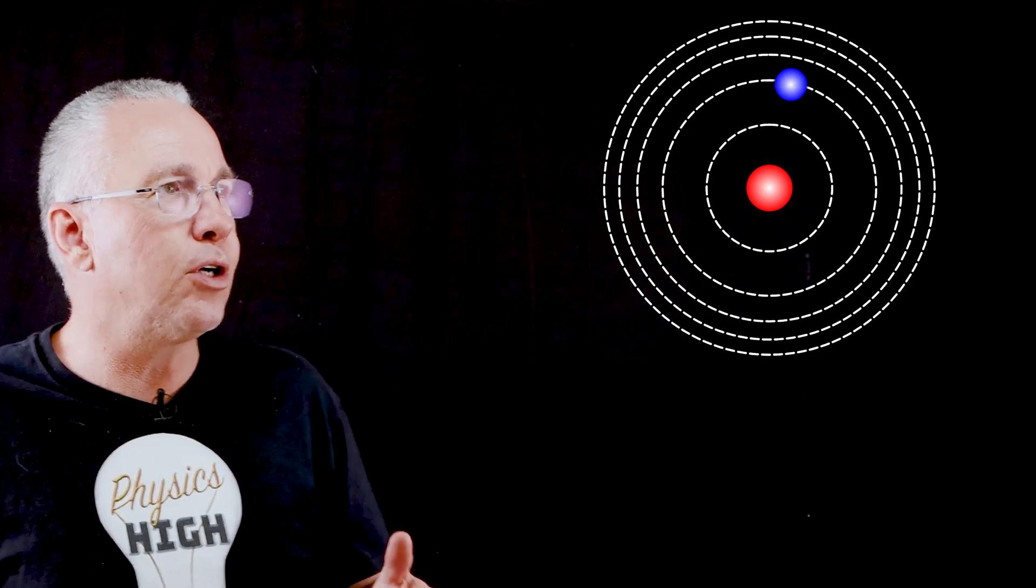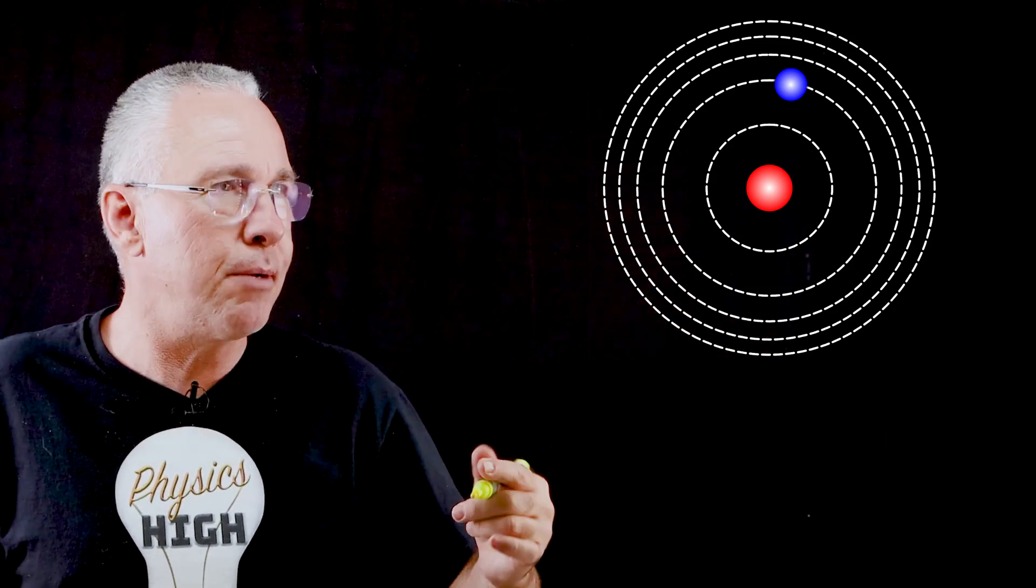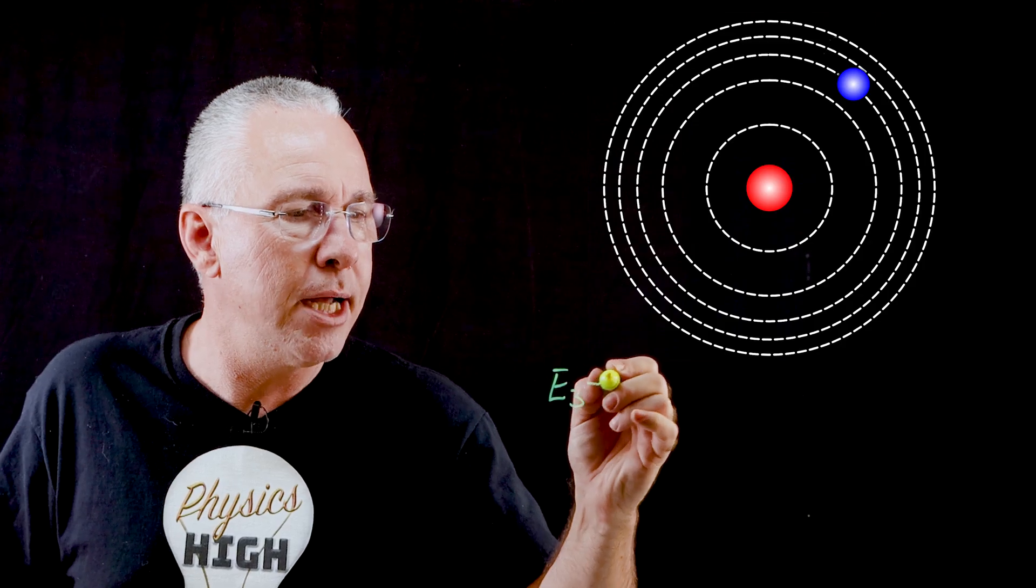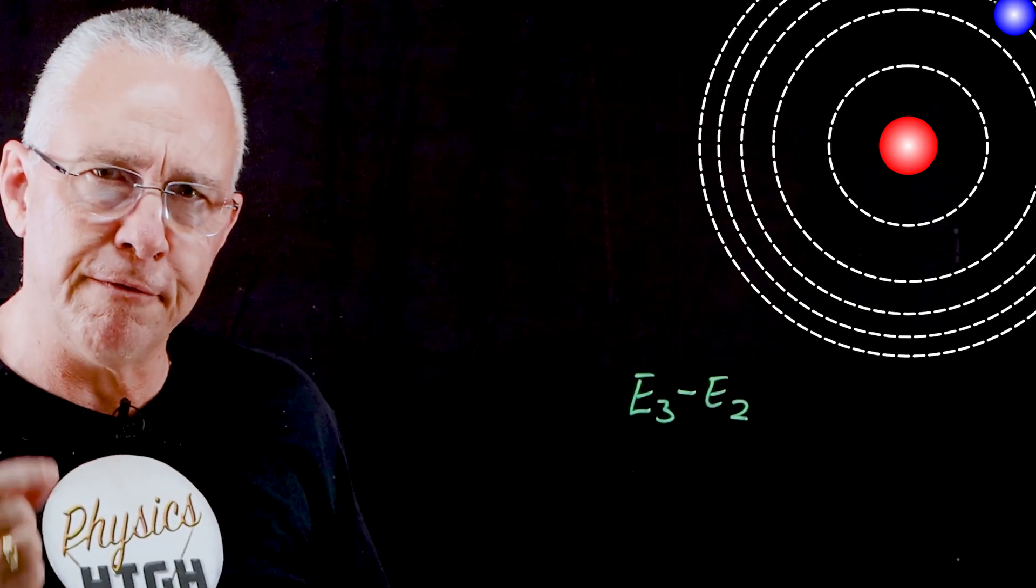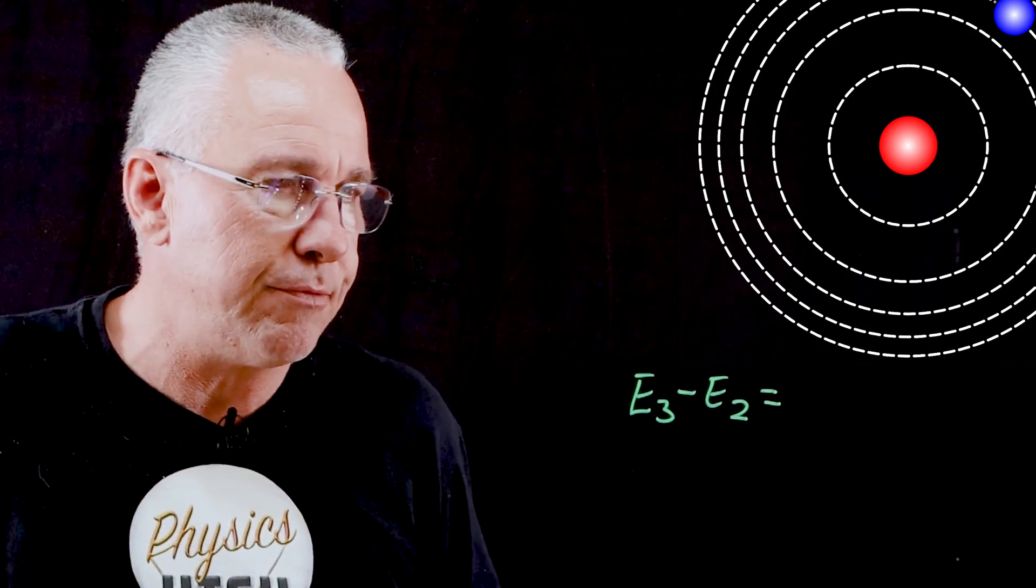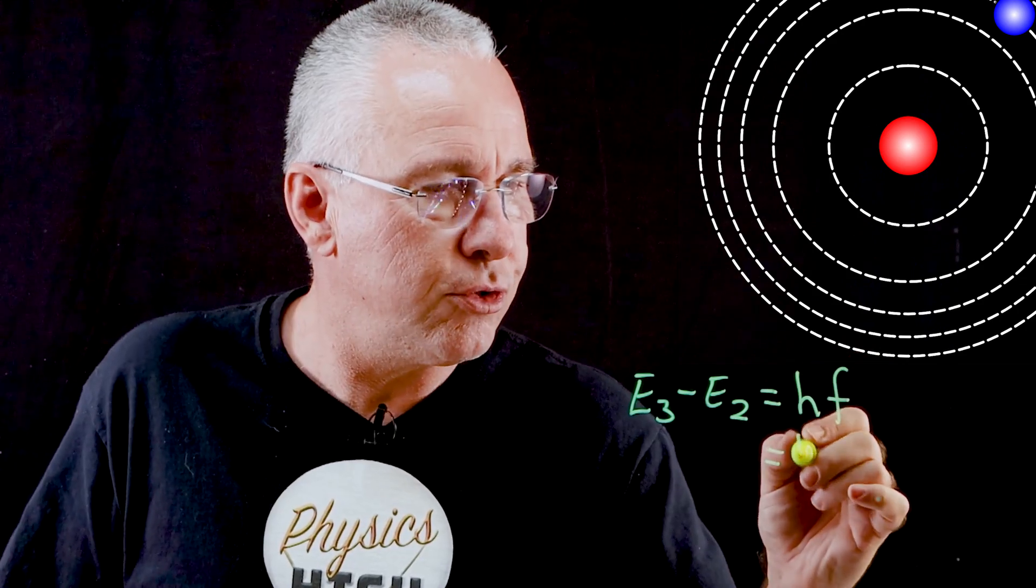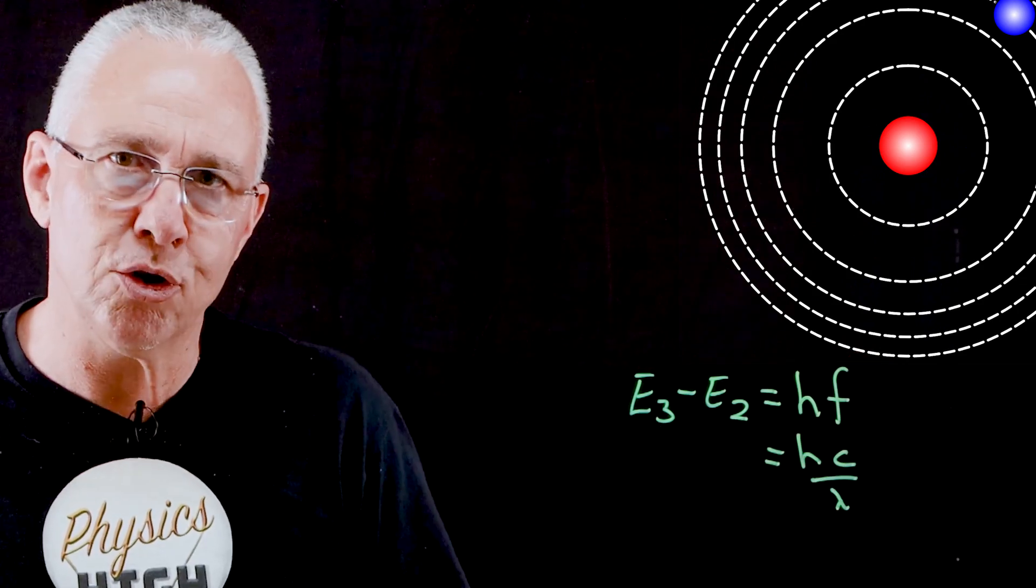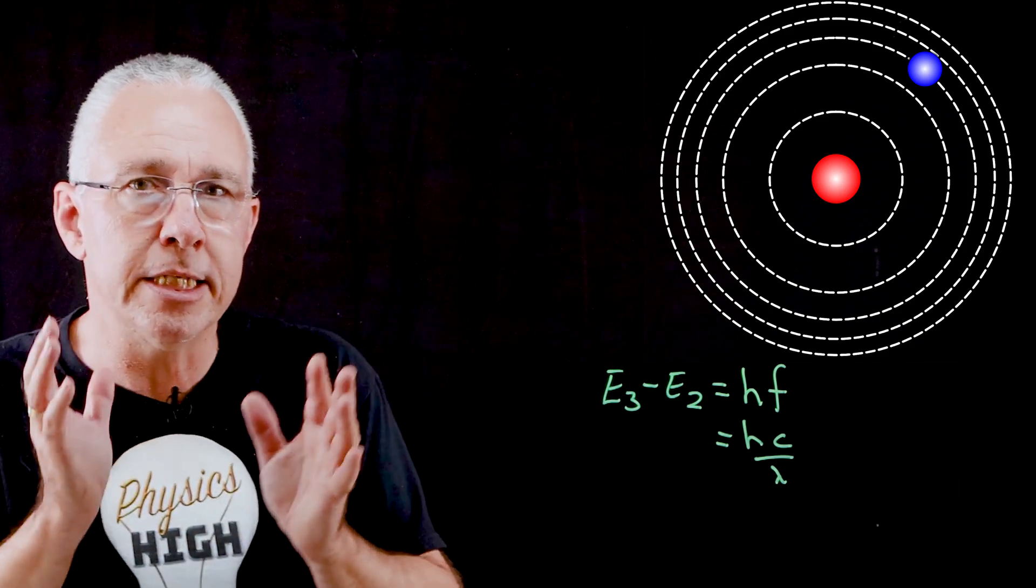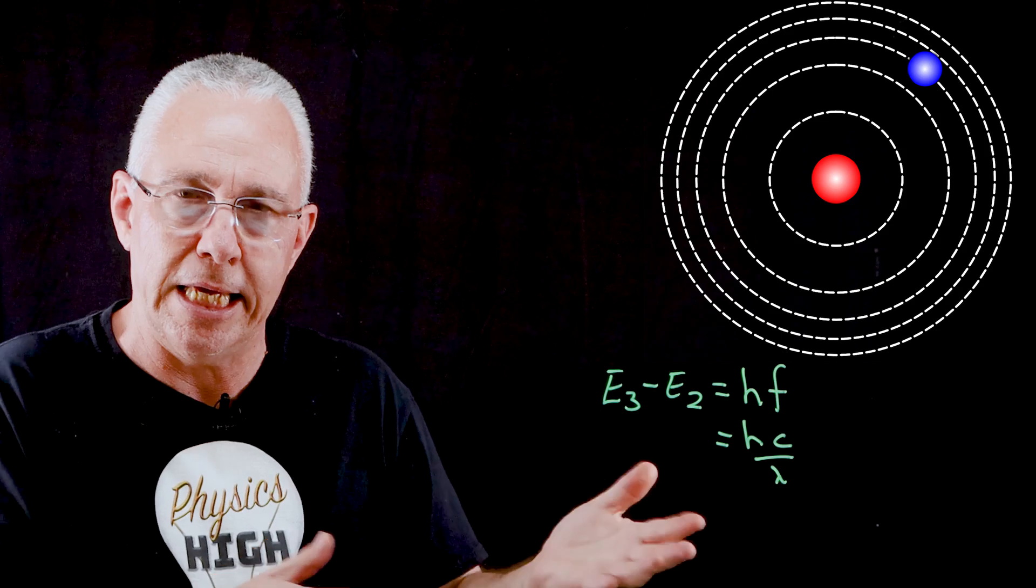So let's say my electron is sitting in the energy level of number two and white light hits it. If it does jump into energy level three, what we have is that the energy level three minus the energy level two is a specific value of energy that has to equal the energy of the photon it receives. And that photon's energy will be hf. This is also equal to hc over lambda.